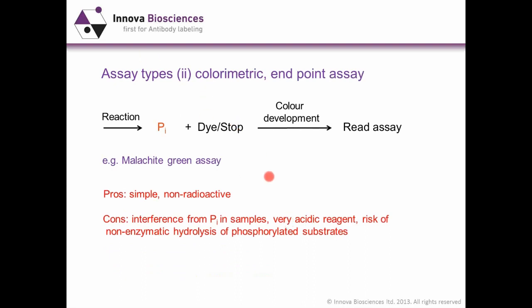Next assay type is a colorimetric endpoint assay. This is the phosphate generated from an enzyme reaction. After a period of incubation — say 15 minutes — the phosphate is accumulated, then you add a dye stop reagent which stops the reaction and initiates color development, and then you read your assay. A typical example would be a malachite green assay. Pros are that it's simple and non-radioactive. Cons: you can get interference from phosphate in your samples, and malachite reagents are very acidic, so there's a risk of non-enzymatic hydrolysis of phosphorylated substrates giving high backgrounds. Most of those problems have now been solved.